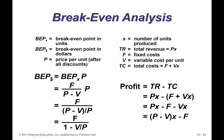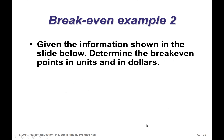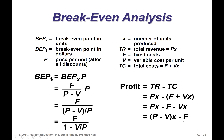Profit equals (P − V) × X − F, which is price minus variable cost per unit times number of units produced, minus fixed costs.